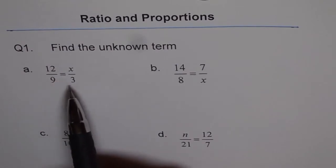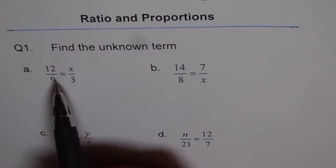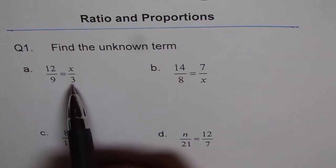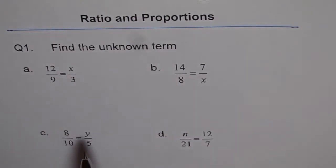Here we have a couple of ratios. Two of them I'll do, and two I'll leave for you to practice. The first one is 12/9 = x/3, and we have to find the unknown. x is unknown here, and y and n are unknown in problems c and d.